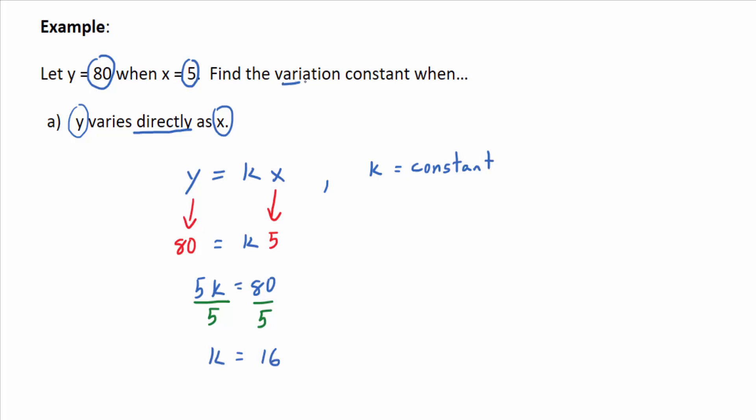So it said find the variation constant when, in this case, part a, y varies directly to x. So k equals 16. You can take it a step further. You can find the variation equation. So technically, this is the answer to the problem, but you'll also need to find the variation equation.